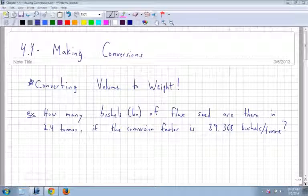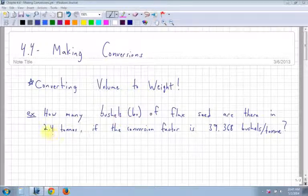For section 4.4, we're going to look at making conversions. So we're going to look at how to convert volume to weight. So here we have bushels of flax, and it says how many bushels of flax seed are there in 2.4 tons if the conversion factor is 39.368 bushels per ton?